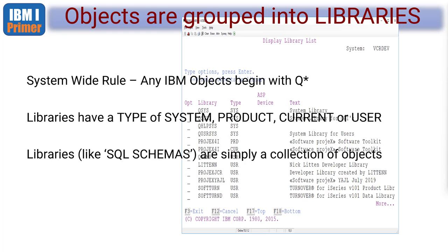General naming conventions apply system-wide: any object beginning with the letter Q is an IBM system object. So the library QSYS is the IBM system library, QGPL is the general purpose library, and QTEMP is the temporary library. These are things you shouldn't delete or change - that's the IBM domain. But you can create anything you like.